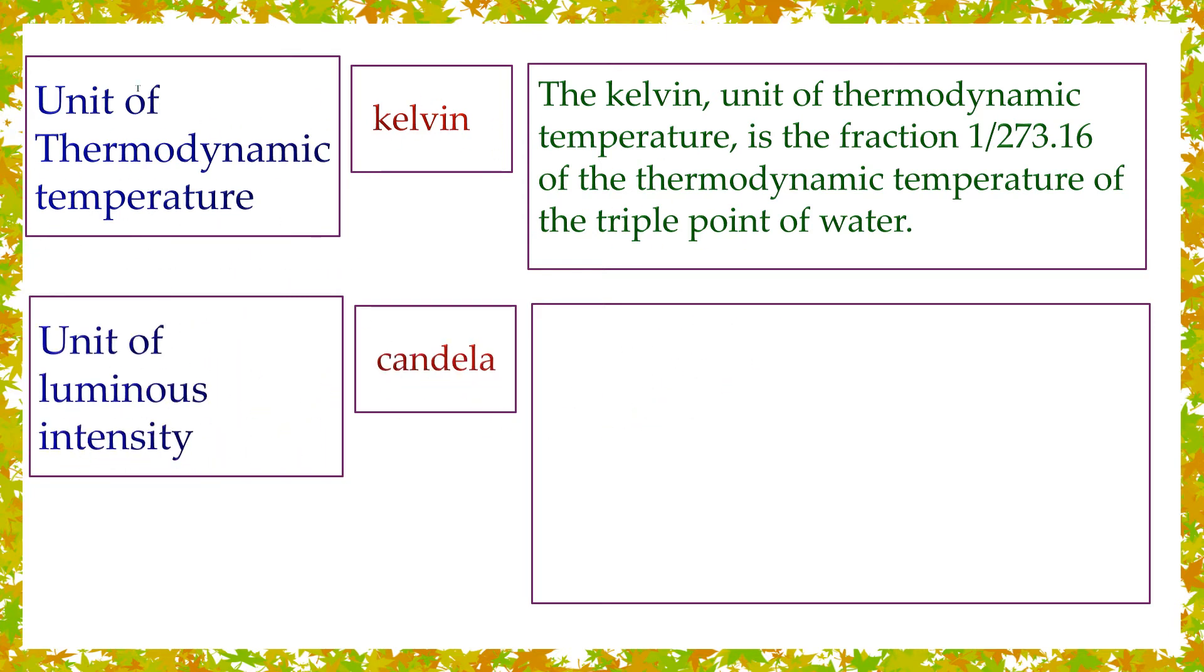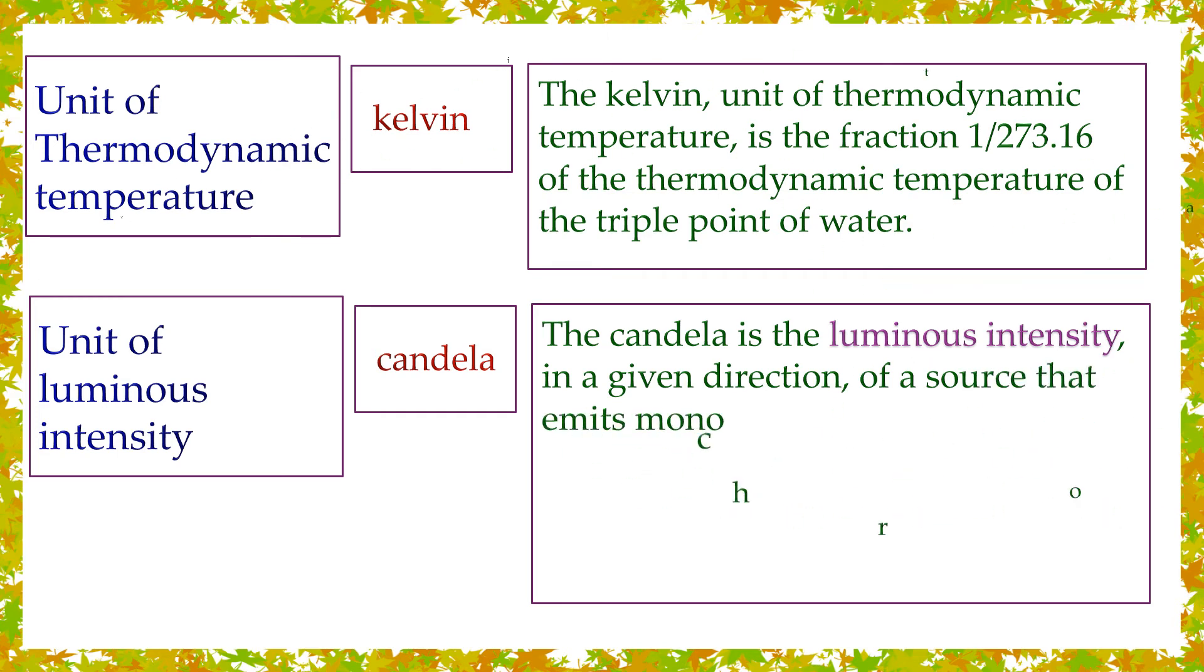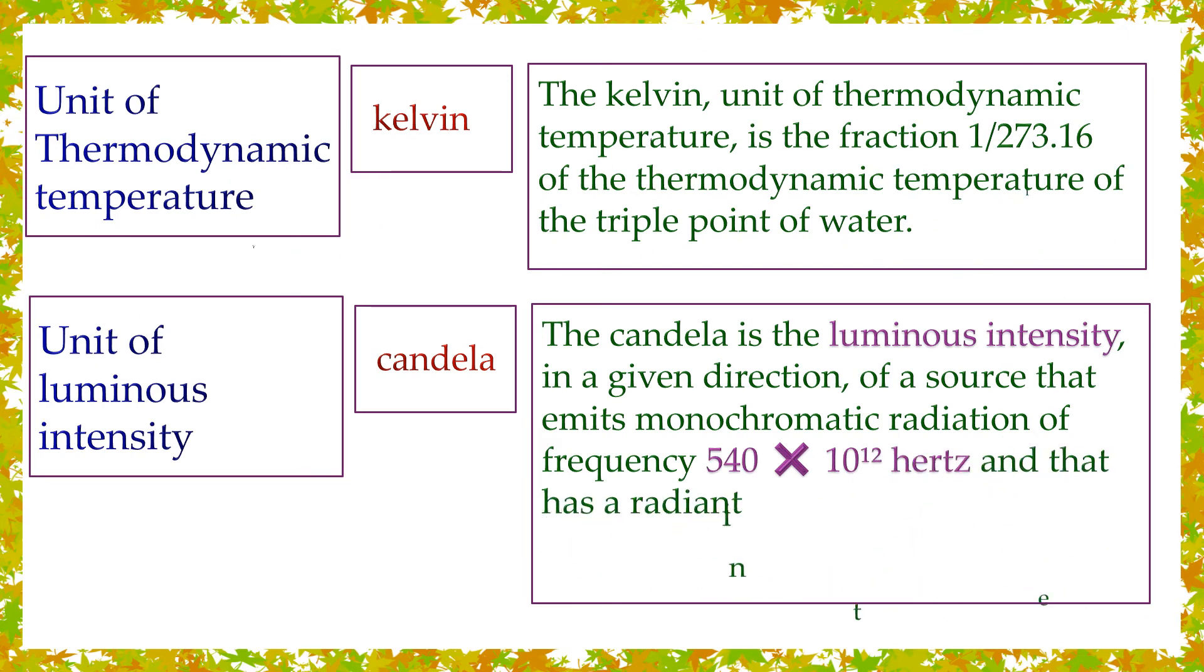Unit of luminous intensity: candela. The candela is the luminous intensity in a given direction of a source that emits monochromatic radiation of frequency 540×10^12 Hz and that has radiant intensity in that direction of 1/683 watt per steradian.